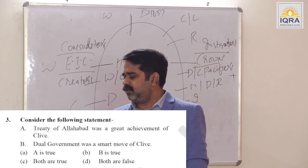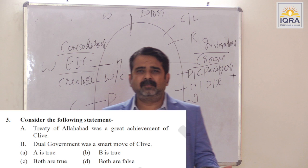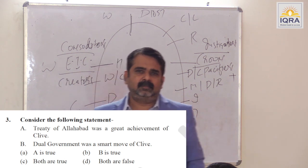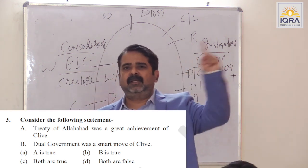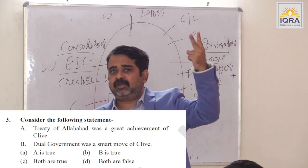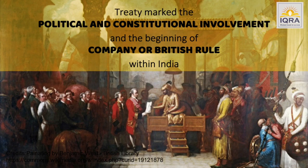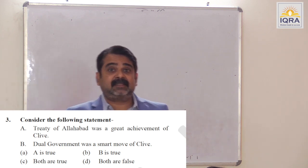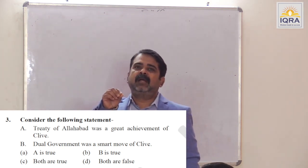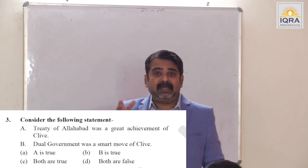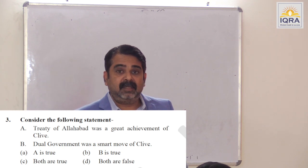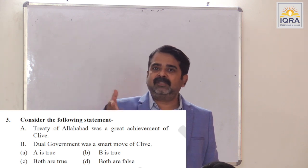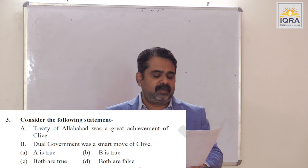The Treaty of Allahabad was a great achievement of Clive — true. Three shots by a single arrow: first, he takes Diwani from Shah Alam; second, he makes Shuja-ud-Daula a friend-cum-slave. Dual government was a smart move of Clive, 1765 to 1772 — no one knew the company had turned into a political power in India, which was very beneficial for the company. Answer is C.